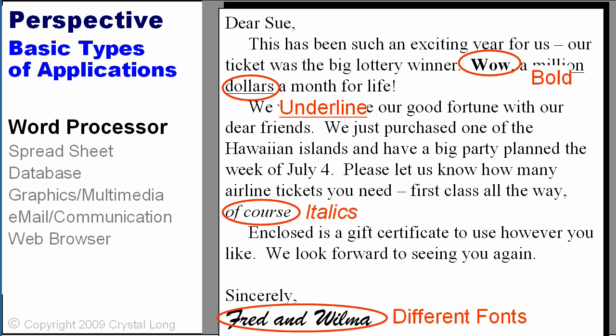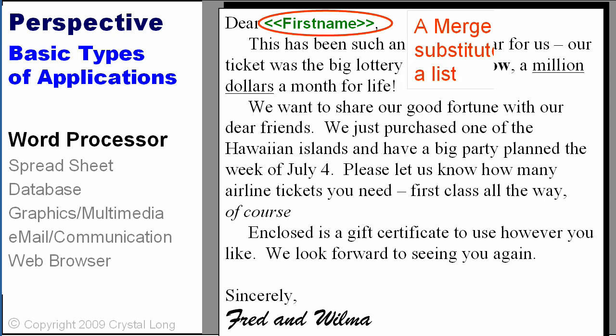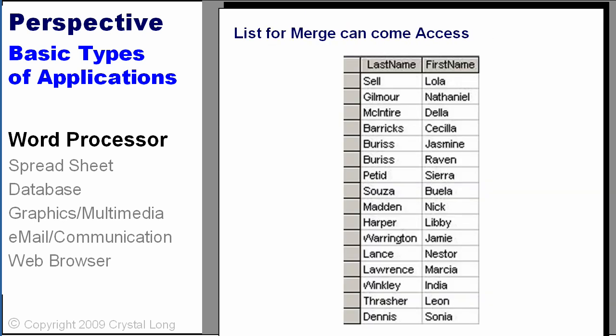Let's say you have a letter you want to write to lots of people, like a Christmas letter, or somebody just won the lottery and they're planning a big party with all their friends to celebrate. The names of these friends can be stored in a list. With Word, we can make a merge letter and substitute data from a list. The list can come from Word, or it can also come from Access. If you want the ability to sort and filter your list easily, you should probably be looking at Access.